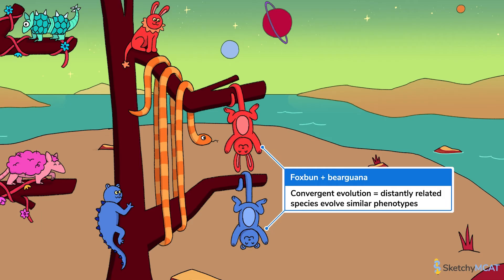And in this sketch, both the blue bear guana and red fox bun evolved swingy tails to get around this selection snake. We can tell that they're distantly related by looking at the ancestor at each branch point. Notice that the ancestors are quite different from each other, even though the species that evolved at the branch tips are so similar.